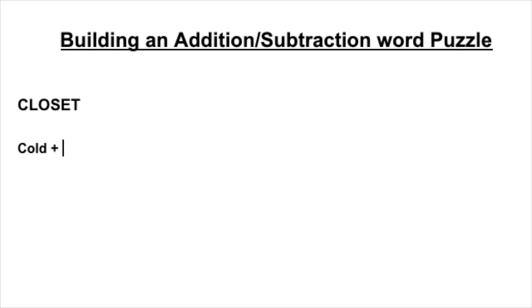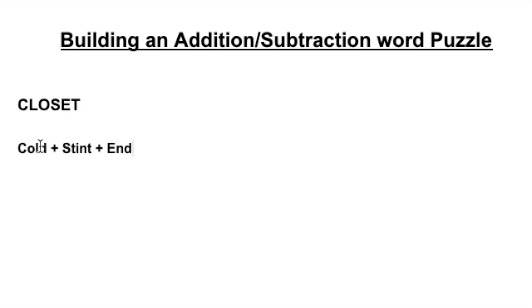First and foremost, you have to find three words that contain all the letters. In this case, we have closet, and so you can see I have cold, stint, and end. I definitely recommend having extra letters left over — quite a few — because you're going to want to add and then subtract.